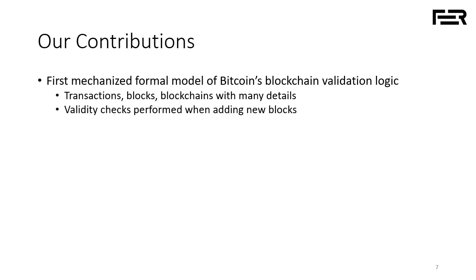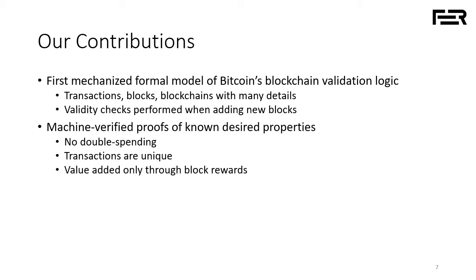Our contributions are as follows. We propose the first mechanized model for basic data structures of the Bitcoin system: transactions, blocks, and blockchains. This model is still simplified compared to the real client but includes many important details — multi-signature, segregated witness, lock times, transaction fees, and so on. We define validity checks performed by clients when adding new blocks to the blockchain, define a blockchain to be valid if all those checks are satisfied, and prove known desired properties: no double spending in a valid blockchain, all transactions are unique, and new value can only be added through block rewards — the value of all unspent coins is exactly equal to the value of all block rewards.